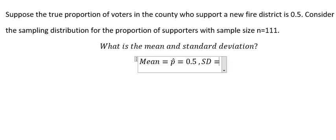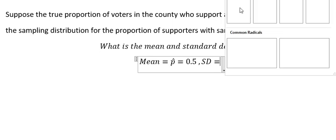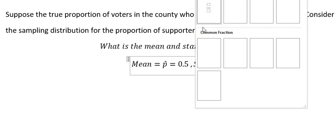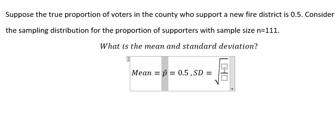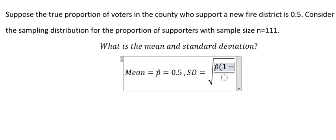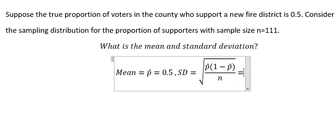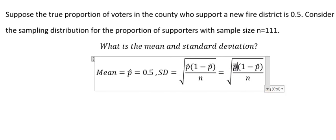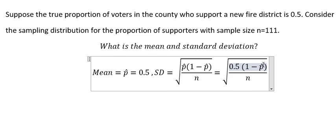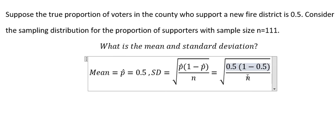About standard deviation, we have the square root of p multiplied by 1 minus p over n. And now we just put the number in here. This is 0.5, this one is 0.5, and that's 111.